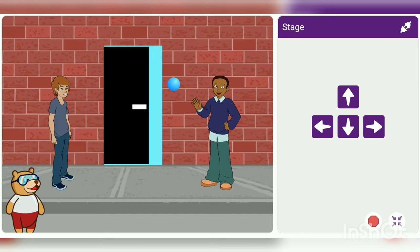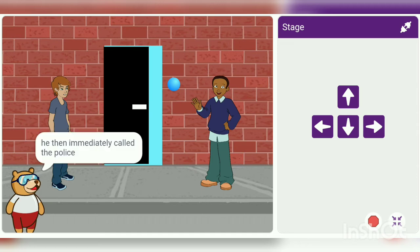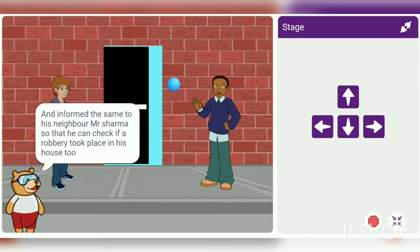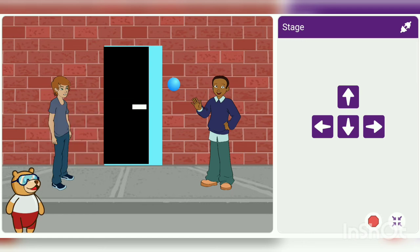Rahul rushed inside his house and saw that his house was in a mess and many things were missing. He then immediately called the police and informed his neighbour Mr. Sharma so that he could check if a robbery took place in his house too.